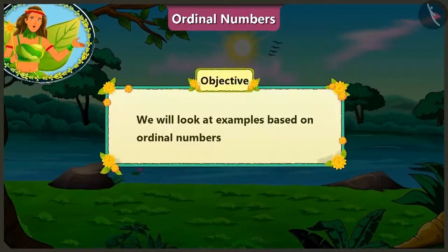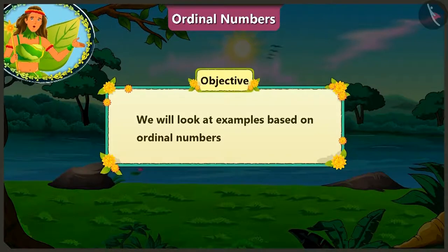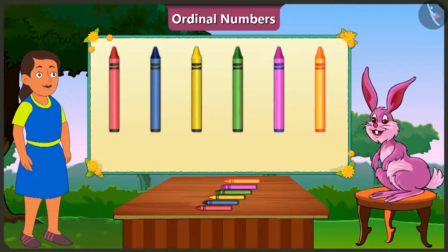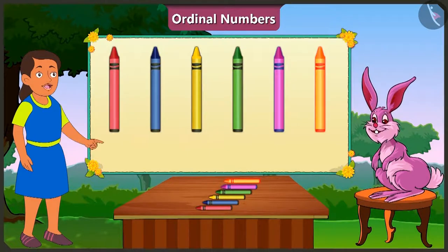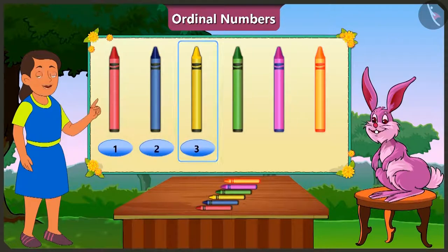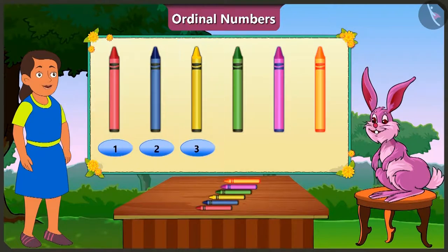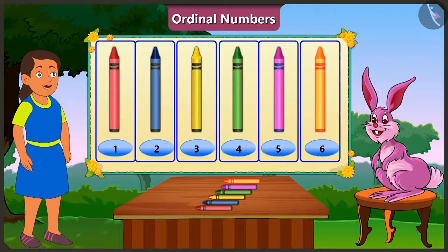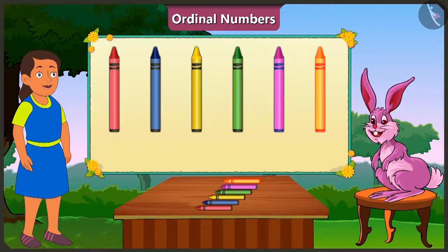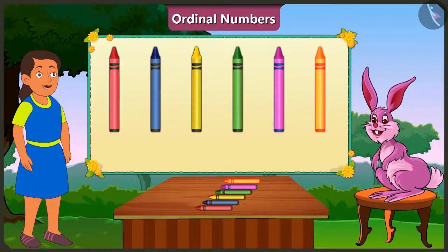Children, today we will look at examples based on ordinal numbers. Bubbly, can you tell me the position of the yellow crayon? One, two, three — the yellow crayon is at the third place. Look, Bubbly, there are a total of six crayons here. When we need to know the position of something, we don't have to count them all.